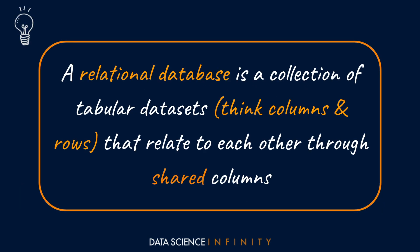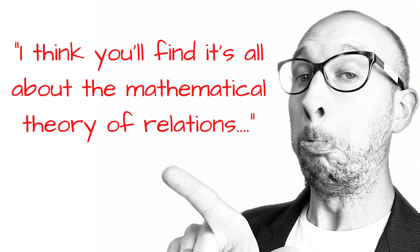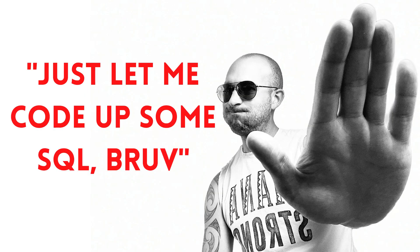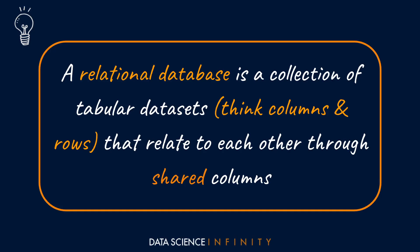A relational database is simply a collection of tabular data sets — think columns and rows — that relate to each other through shared columns. Technically this is based upon the mathematical theory of relations, but unless you are designing the database structures themselves, you really only need to know what's on screen here.